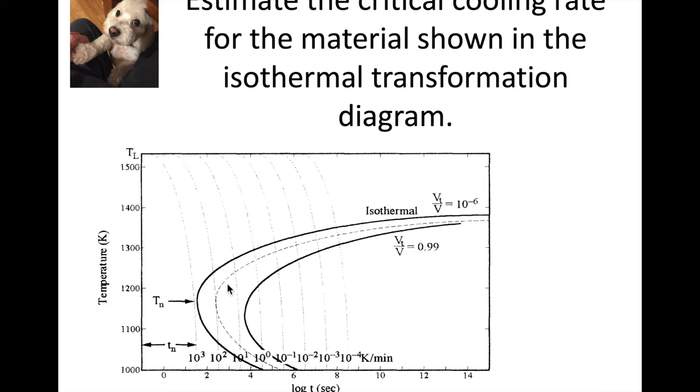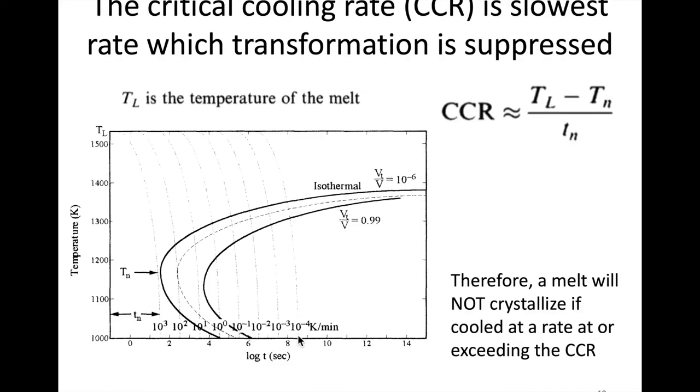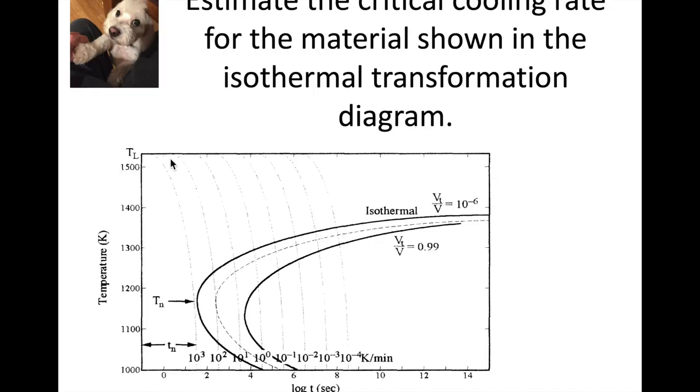Let's take a look at this problem. Before I flip over to the piece of paper to work this out, we need to record a couple values. We need to know the melt temperature, the nose temperature, and then the nose time. The melt temperature is described up here, past 1500K, so I'm going to call that around 1525. The temperature here at the nose is about 1175K. For the time, the time is right here at the time of the nose, so I put that at about 1.5, but keep in mind that's log T. Now I'm going to switch over to a piece of paper and we'll work out the calculation.